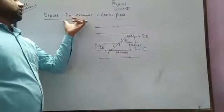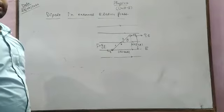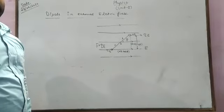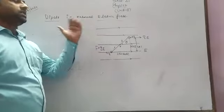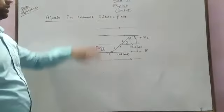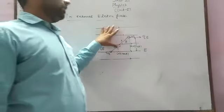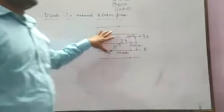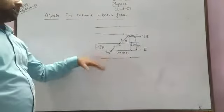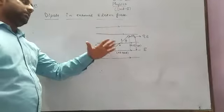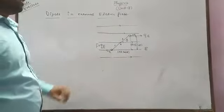In this lecture we have discussed the axle position, electric field on an axle position, and electric field in an equatorial position. Now we are discussing the dipole placed in an external electric field. The external electric field is a field which is present before the dipole is placed in it — this is called the external electric field.